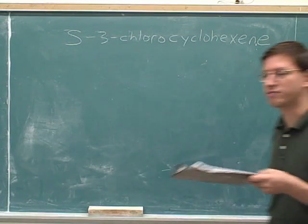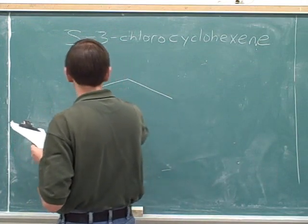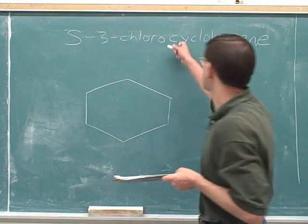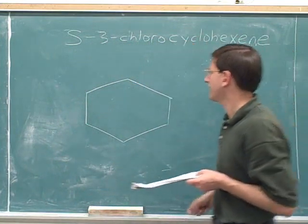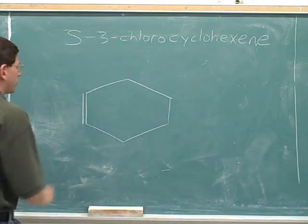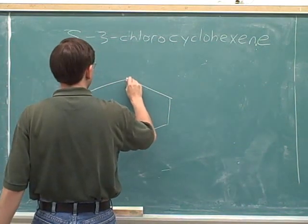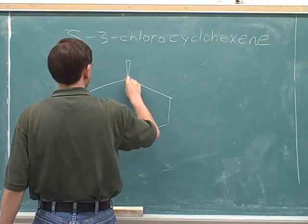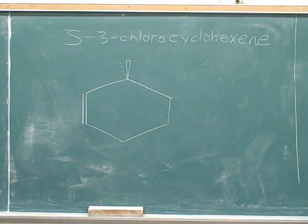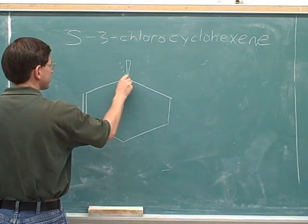I hope that you paused the video and gave that a shot. It's cyclo, so it's cyclic. Hexene means there's a double bond. If we call this the number one carbon, then this is the number two carbon, then this would be the number three carbon. So this is the stereocenter.